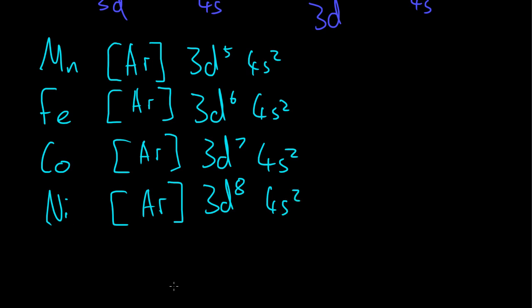But then when we get to the next element, copper, something weird happens again. As we saw in the last example with the chromium, it becomes unstable when one of them is half filled and the other one is completely full. It's better for them to be in a different state. And that's what happens with copper. We would expect copper to look like this with the nine electrons in the 3d orbital and two in the 4s orbital.